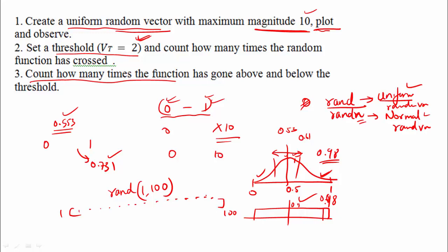If we generate this, we will plot it. Suppose we have 3 random values and we plot it. This is a single straight line.